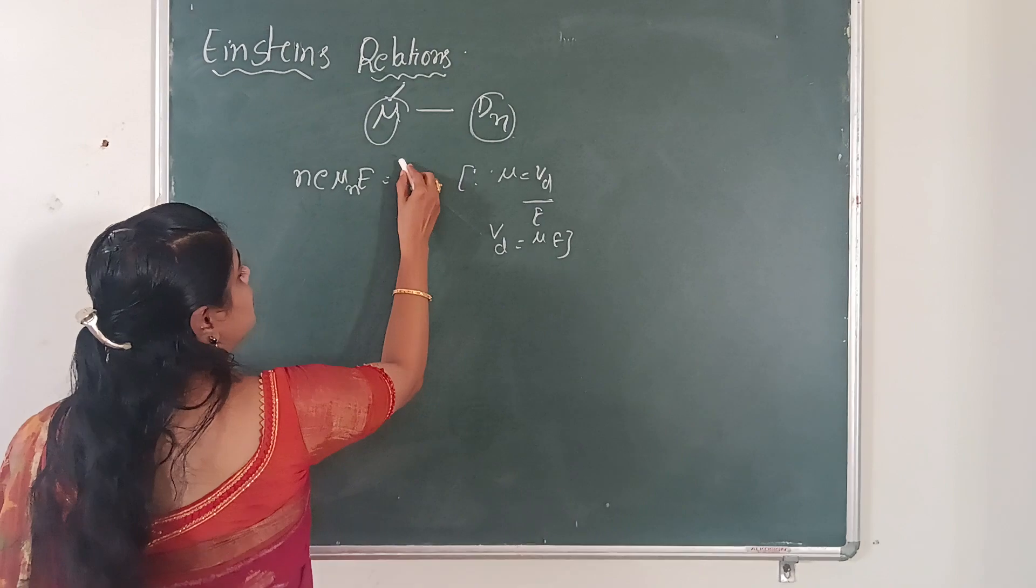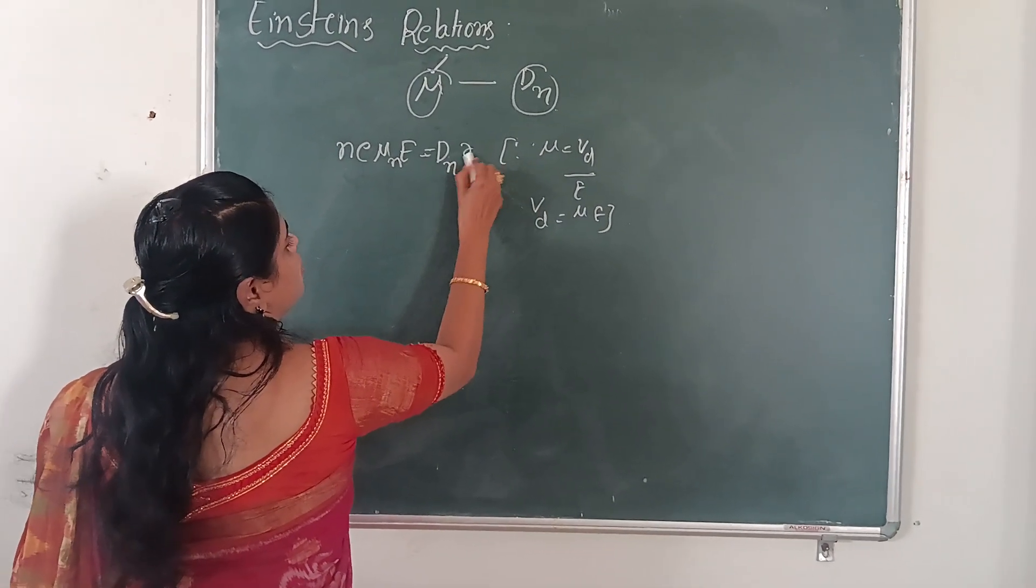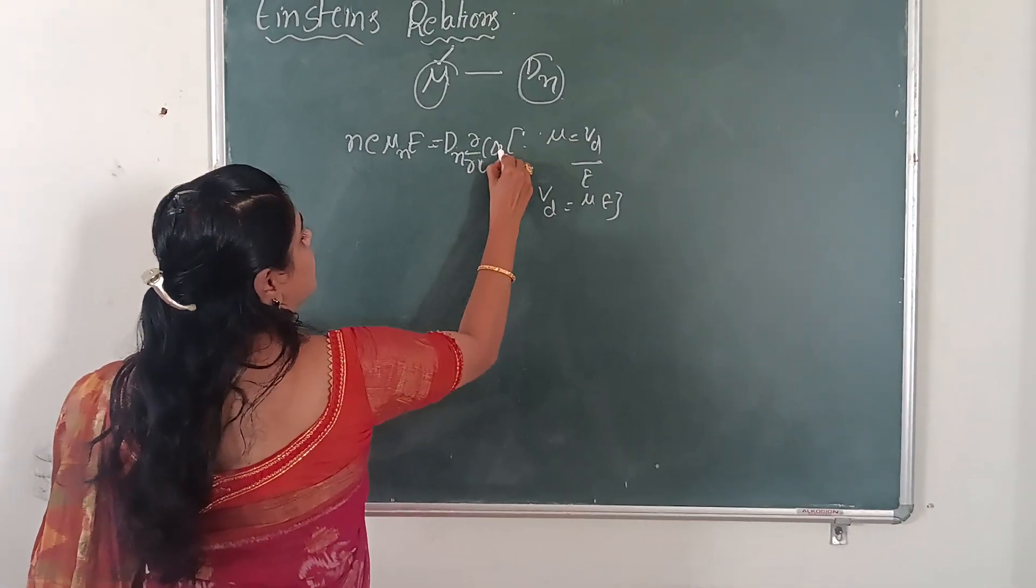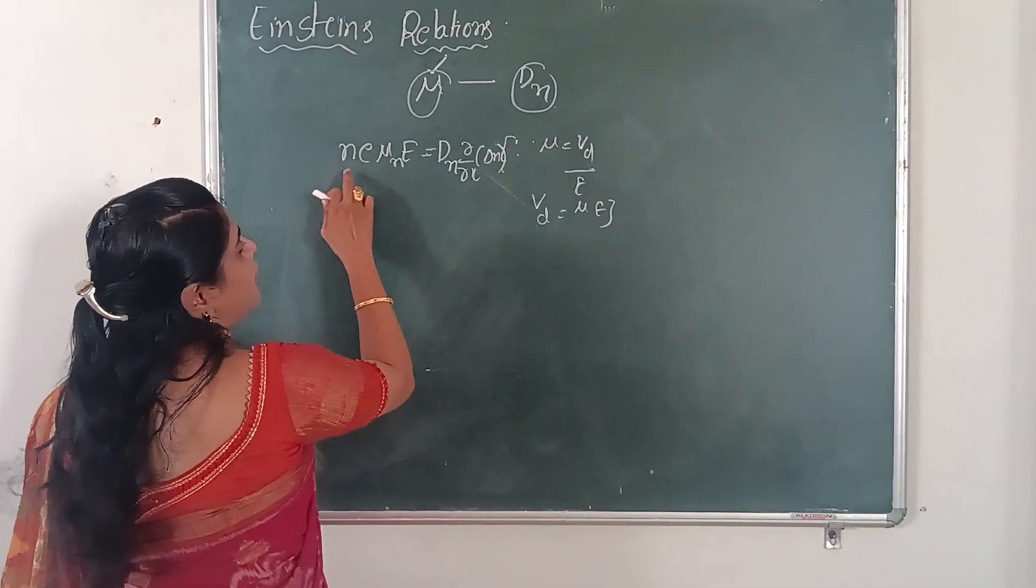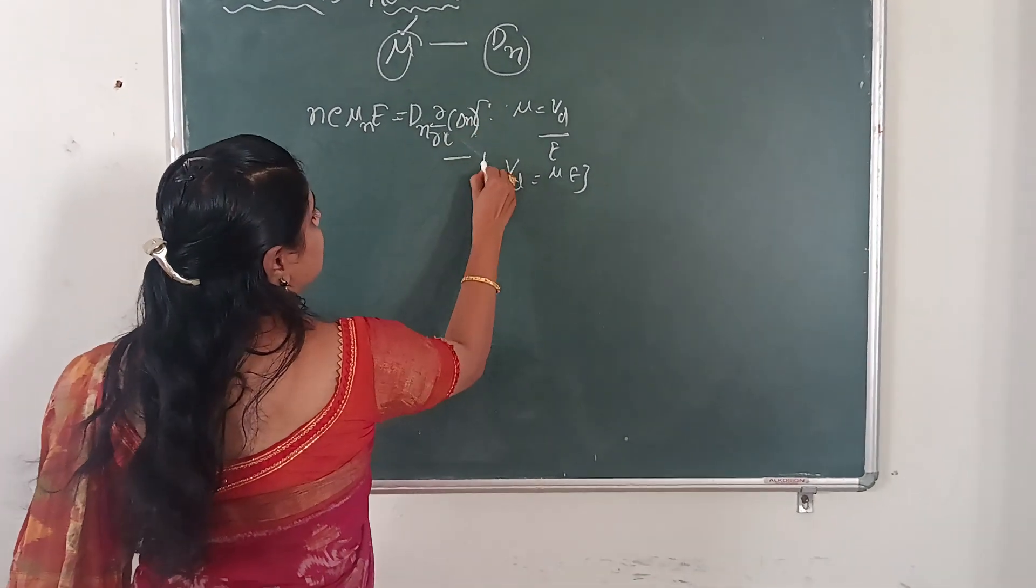Which is equals to diffusion coefficient dn into d by dx of delta n. Therefore, NeV mu n equals to dn into d by dx of delta n.